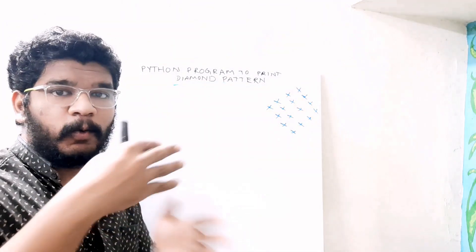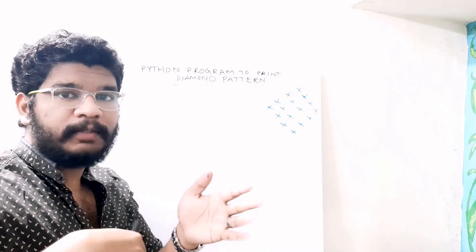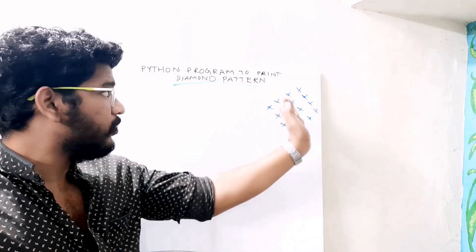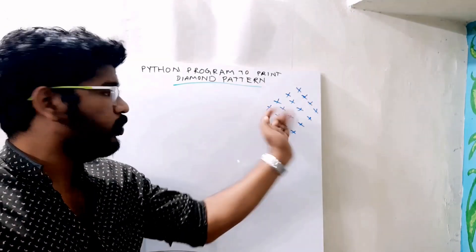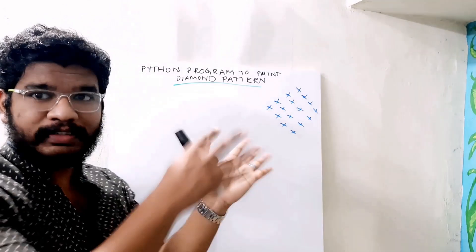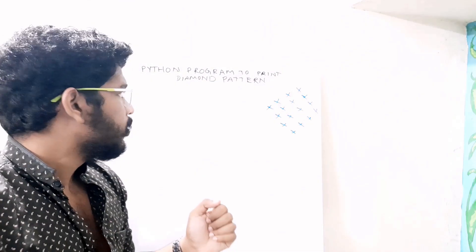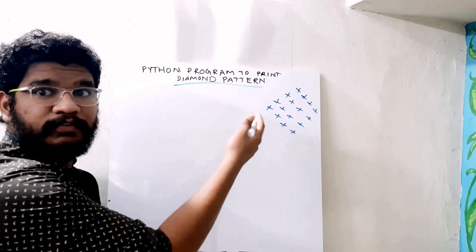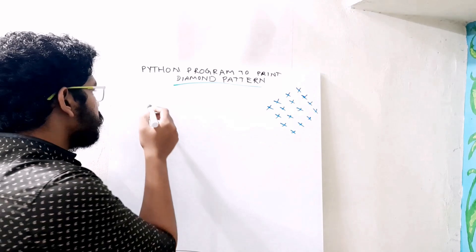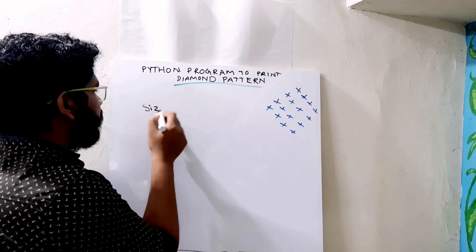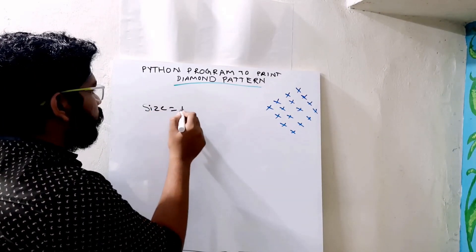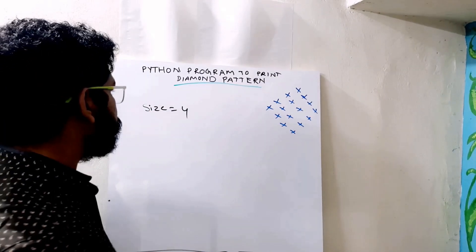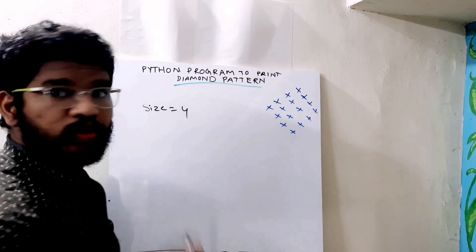We don't loop rows and columns here. I will directly print the rows — first row, second row, third row, fourth row. I will print the rows directly. So let's see how this happens. Let us set the size to 4. So I will write size equal to 4.